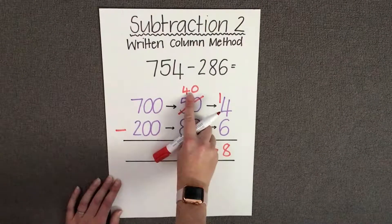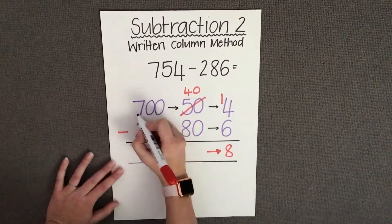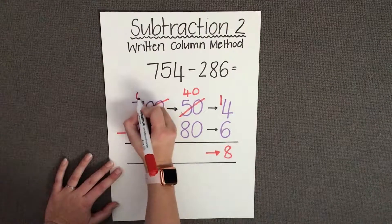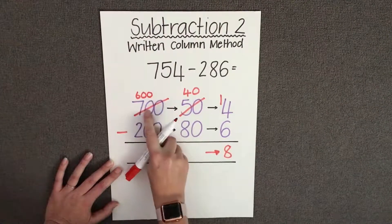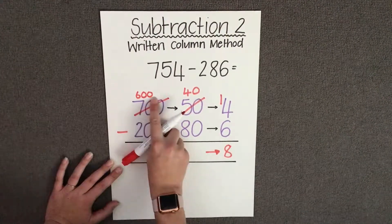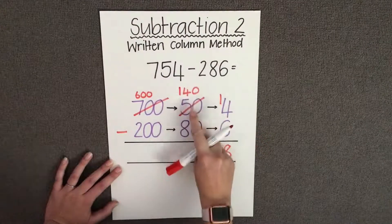so I have to make sure that I borrow from my hundreds. I'm going to borrow 100 from this column here, which takes 1 from the 700s, giving 600, and gives the tens 140.